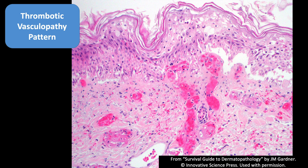Thrombotic vasculopathy pattern is when you have thrombi in vessels but without vasculitis. Here the thrombi — these pink blobs — are filling the vessel. This congestion is just red blood cells packed together because the thrombi are blocking the vessels, cutting off blood supply to the epidermis. The epidermis is beginning to fade and undergo acute necrosis from acute ischemia.